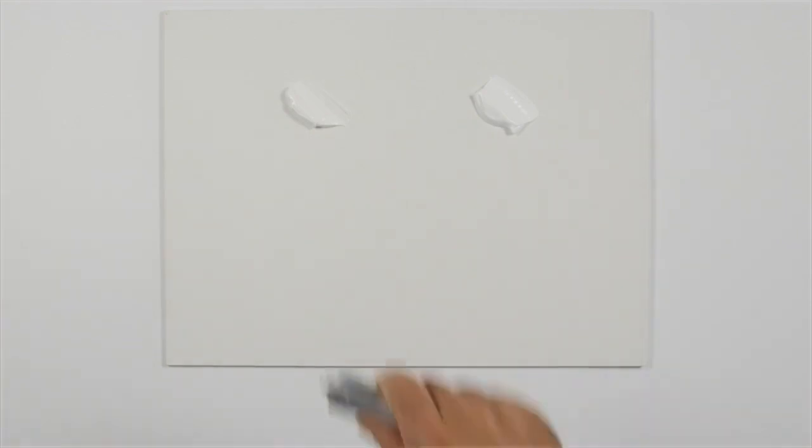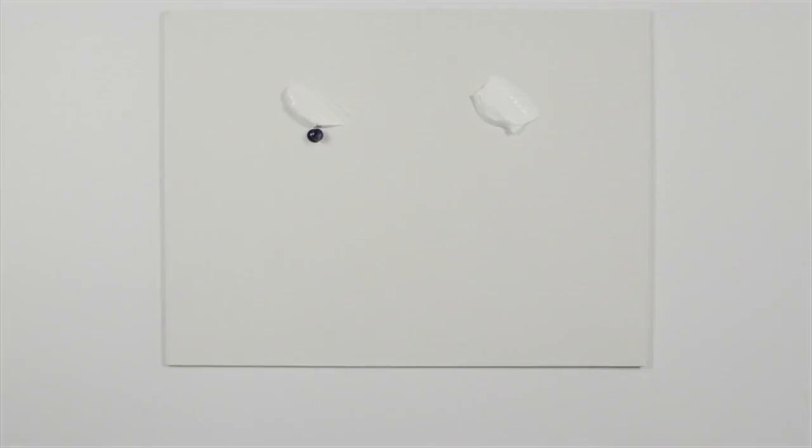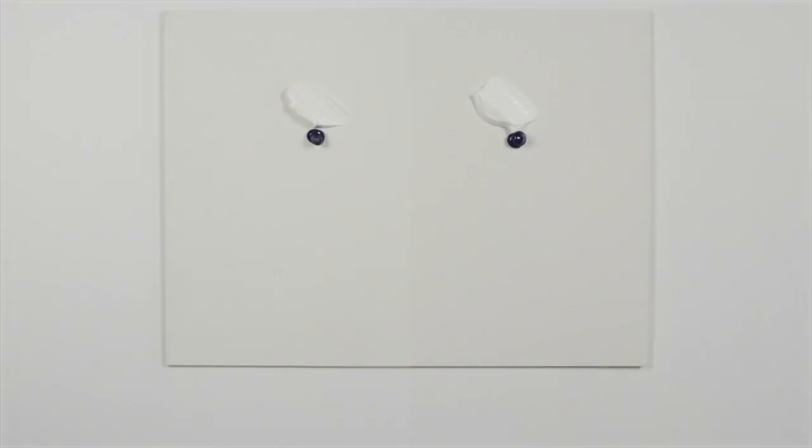I'm going to measure out approximately five parts of mixing white and titanium white to one part phthalo blue red shade to make the comparison as fair as possible.